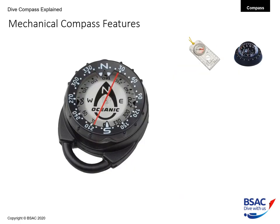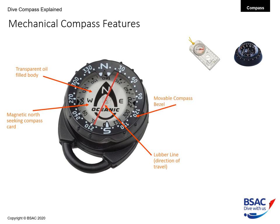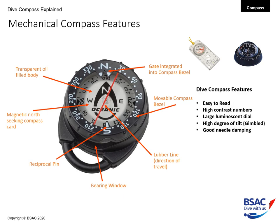We now need to consider the mechanical compass features. First, we have a transparent oil-filled body. We have a magnetic north-seeking compass card, a lubber line or direction of travel, a moveable compass bezel, a gate integrated into the compass bezel, a reciprocal pin, and finally a bearing window.